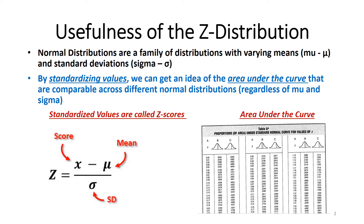Standardized values, in this sense, simply refer to the value of what we call Z scores within the Z distribution. I give you an example of one of the formulas for computing Z scores. If you look at the lower left-hand side of the slide, you'll see the formula: Z equals X minus mu, divided by sigma. This shows you how we could take any raw score from any normally distributed phenomenon and figure out what somebody's Z score is.